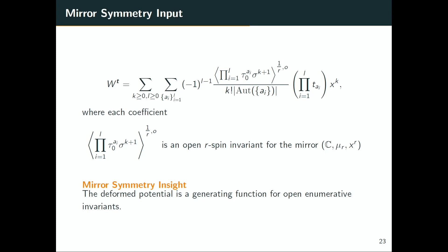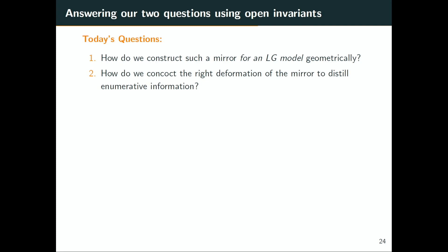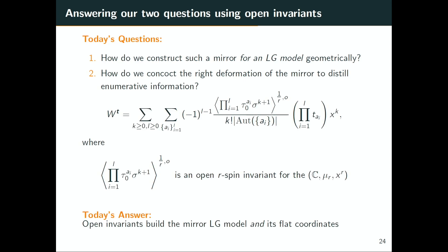Before, in the Fano manifold case, this was seen by Fukaya, Oh, Oda, and Ono, or Cho and Oh, or Mark Gross and Gross-Siebert, by thinking of Maslov-index-two disks or tropical disks. But here we have to build a whole new open enumerative theory for a Landau-Ginzburg model. Fortunately for the R-spin version, this was done by Buryak, Clader, and Tesler. We're able to use that point of view to answer the two questions we had today: how do we construct such a mirror for an LG model geometrically, and how do we find the right deformation? We use open enumerative invariants.